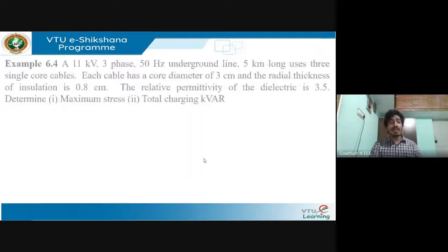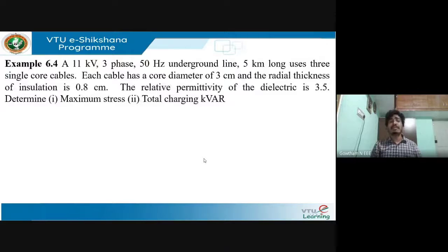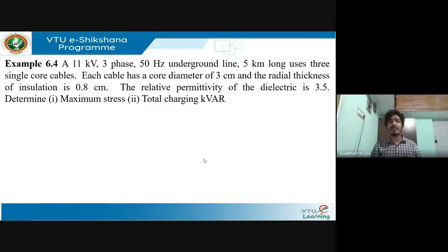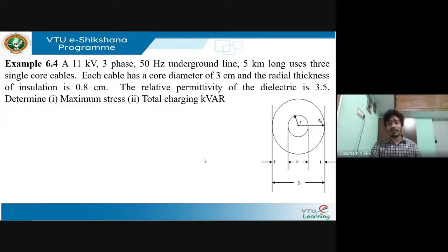The next problem: an 11 kV three-phase 50 Hz underground line, 5 km long, uses three single core cables. Each cable has a diameter of 3 cm and radial thickness of insulation of 0.8 cm. The permittivity of the dielectric is 3.5. We are to determine the stress and the total charging kVAr. A diagram is used where thickness t and diameter d are identified.